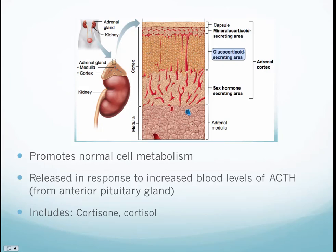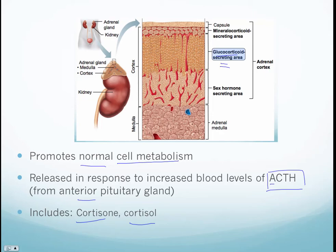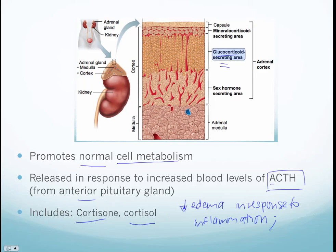Moving on to the glucocorticoid secreting area — it secretes two types of hormones: cortisone and cortisol. These are necessary for normal cell metabolism and are released in response to stress. They're triggered by adrenocorticotropic hormone from the anterior pituitary gland. Glucocorticoids can also decrease edema in response to inflammation, and can inhibit pain by affecting molecules such as prostaglandins.